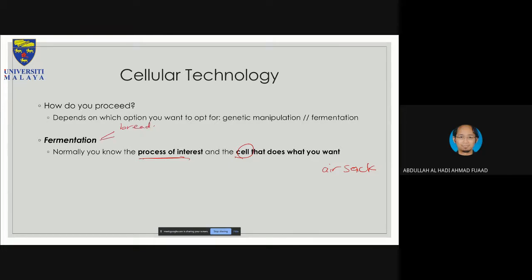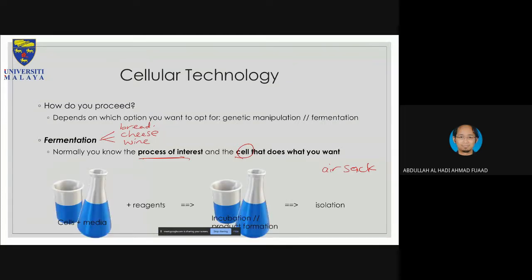Those are three examples of fermentation: bread making, cheese making, and wine. I put wine there because during my time studying in Australia, the wine industry was very large and I learned a little bit about it. Fermentation is very straightforward: you have the cell, you have the media, you have the reagents, you mix them together, incubate, and you produce your product. For wine you do isolate and purify it to control the alcohol content, but for bread and cheese, normally you just eat it as is.